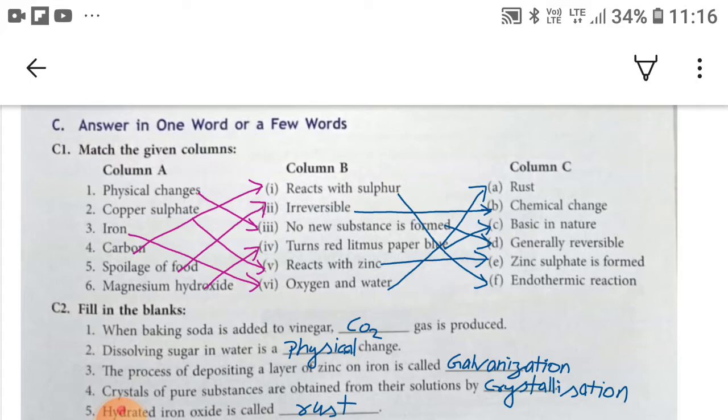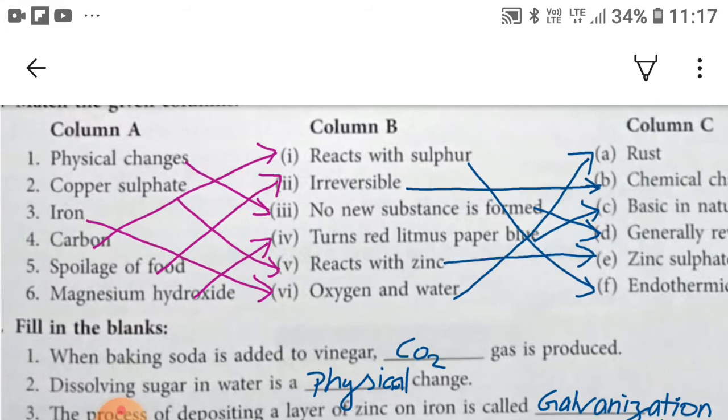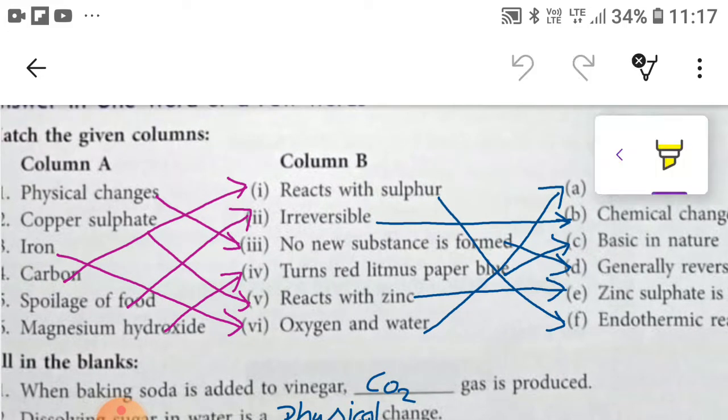So here you have to match these columns. First, physical change can be matched with no new substance is formed, and no new substance is formed can be matched with generally reversible.